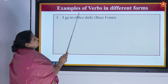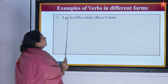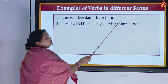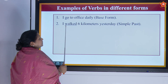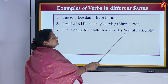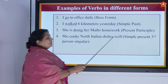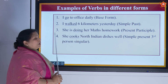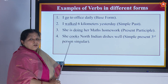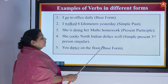Now let us see some examples of verbs in different forms. 'I go to office daily' — base form. 'I walked six kilometers yesterday' — simple past (w-a-l-k-e-d). 'She is doing her maths homework' — present participle. 'She cooks North Indian dishes well' — simple present third person singular. 'You dance on the floor' — base form.